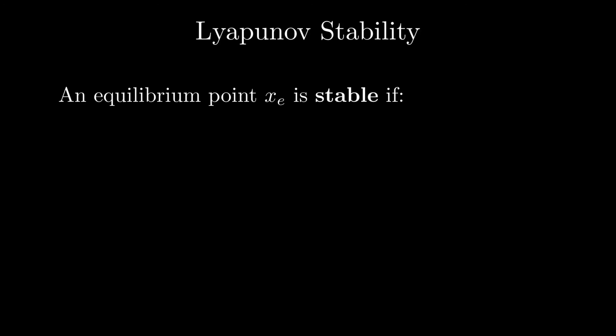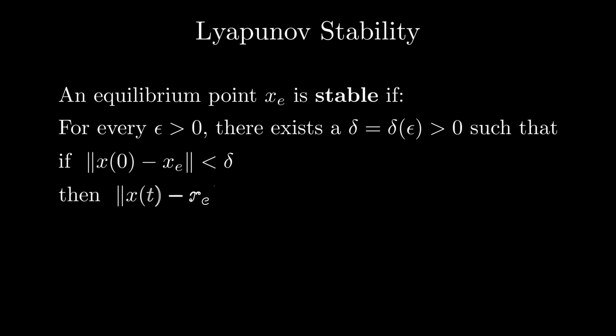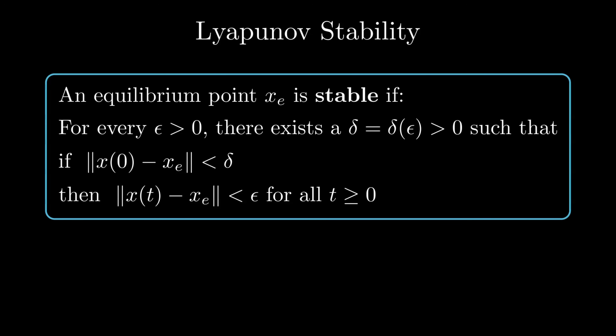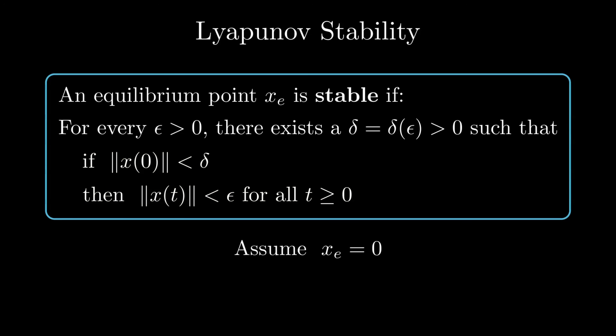Let me give you the formal definition of Lyapunov stability of an equilibrium point. The equilibrium xe is stable in the sense of Lyapunov if for every ε > 0 there exists a δ(ε) such that if the initial perturbation is less than δ, then the perturbation is less than ε for all times t. The first distance condition is indicated as the norm of x(0) minus xe less than δ. Similarly, the second distance condition is the norm of x(t) minus xe less than ε. For simplicity, we consider the case in which the origin is the equilibrium point, as in the harmonic oscillator.